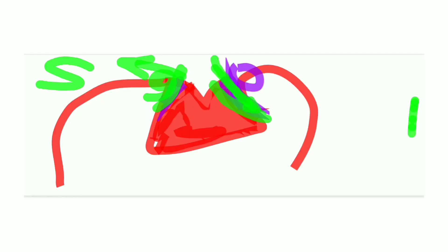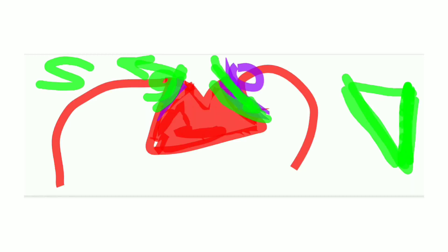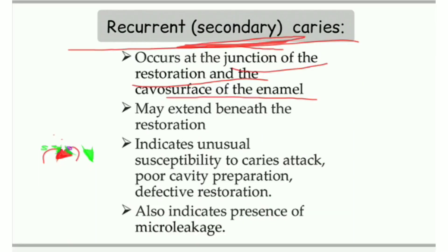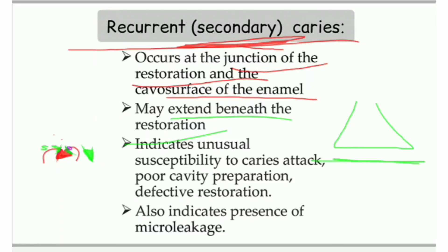This is our wall of the restoration and this is our cavosurface margin, and all this center area has undergone caries progression. It may also extend beneath the restoration. In some cases, condensation is not proper, so the restoration has a gap present between the prepared wall and the restoration, and in that area also caries progresses beneath the restoration.